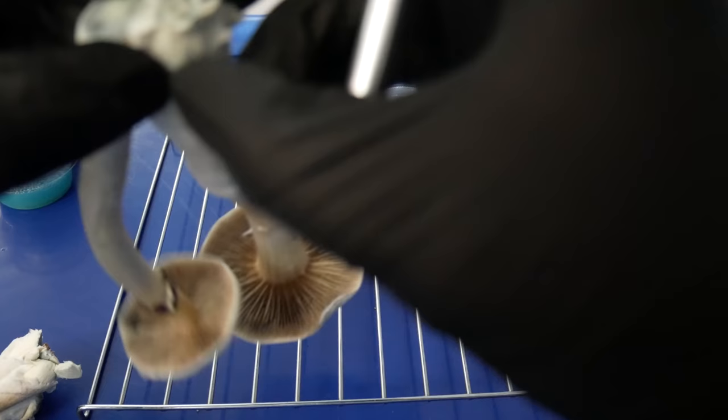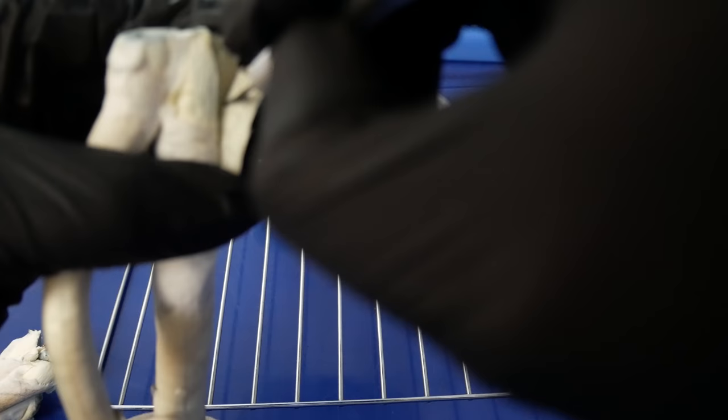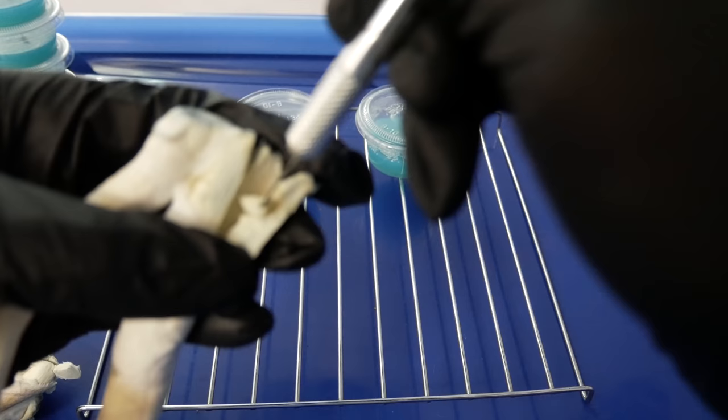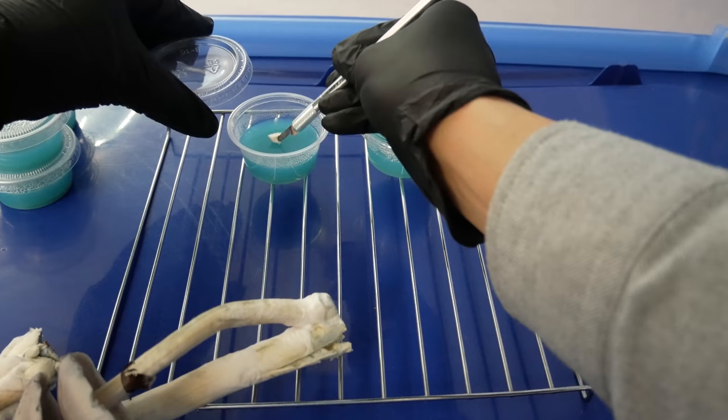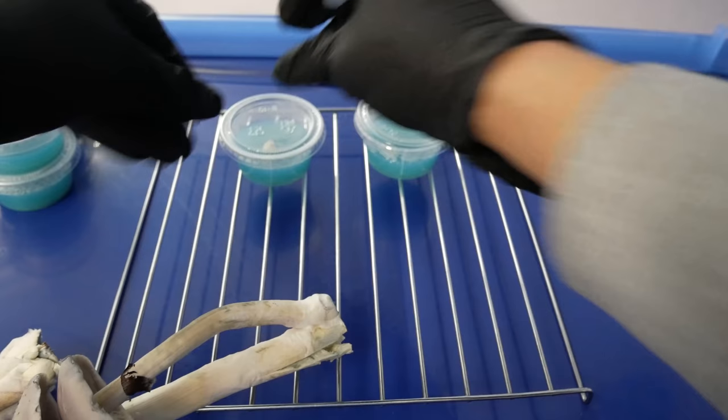And we split this down from the middle. Exposing clean mycelium. And we'll cut out a piece of sample here. Very gently. Once we have our tissue, go ahead and place this on our agar. And we'll repeat the process for as many times as you like.